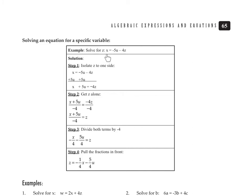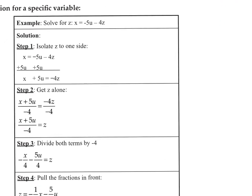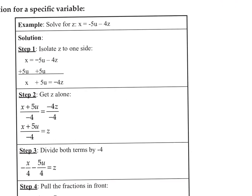This one says solve for Z. And here's the equation. X equals negative 5U minus 4Z. The equation we're working with is X equals negative 5U minus 4Z. And the directions tell us to solve for Z. So first identify where is Z. It's right there.